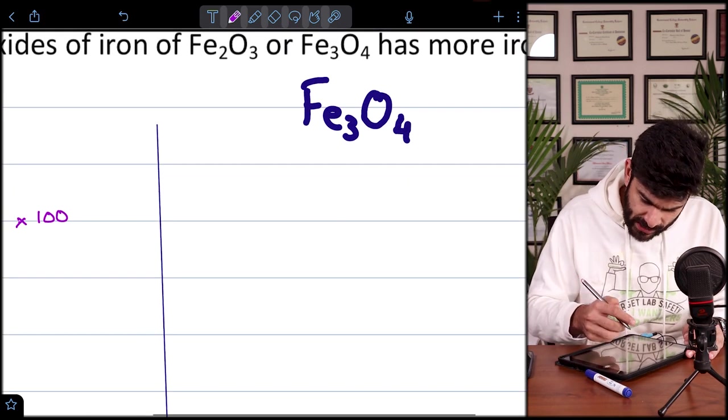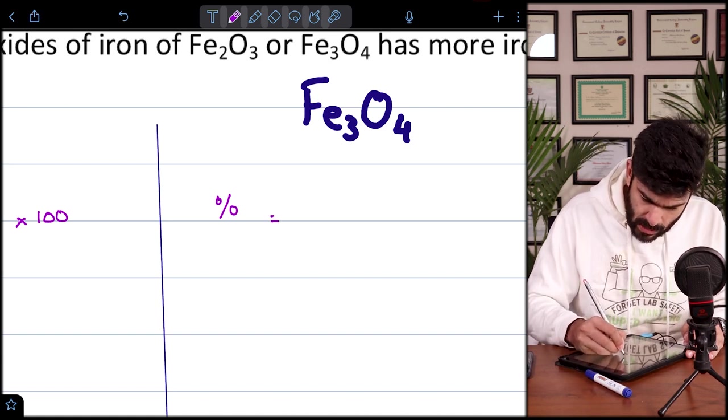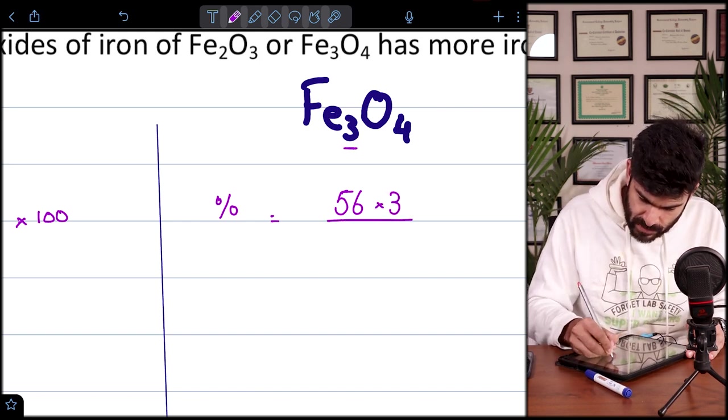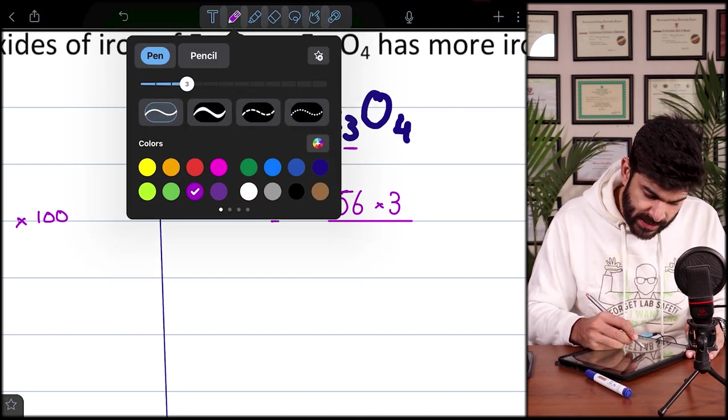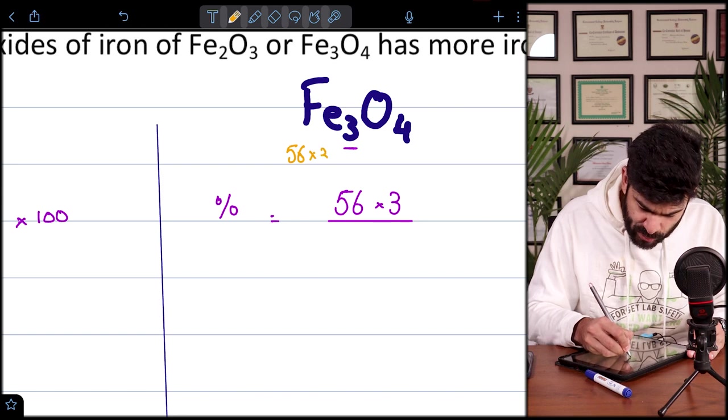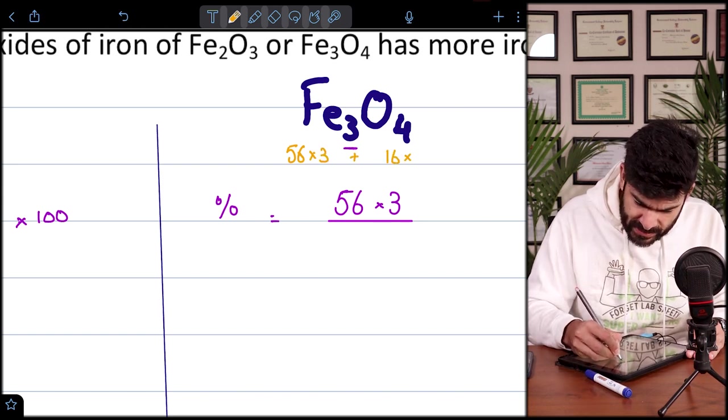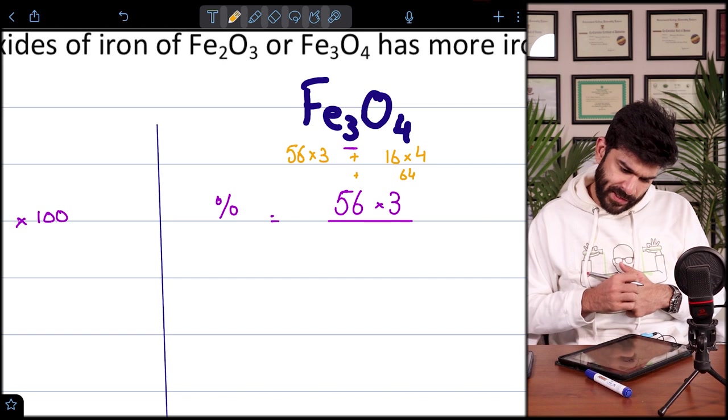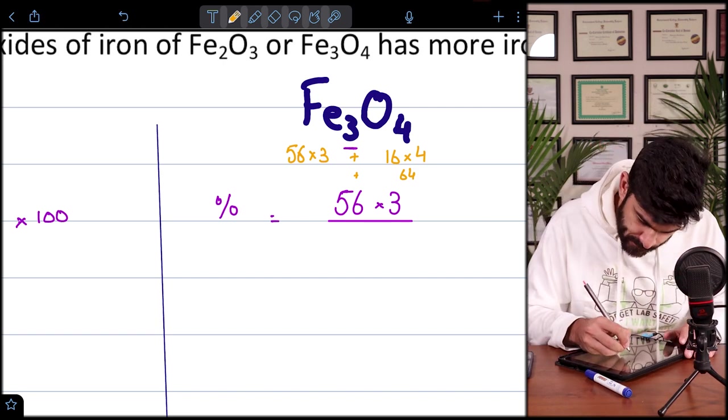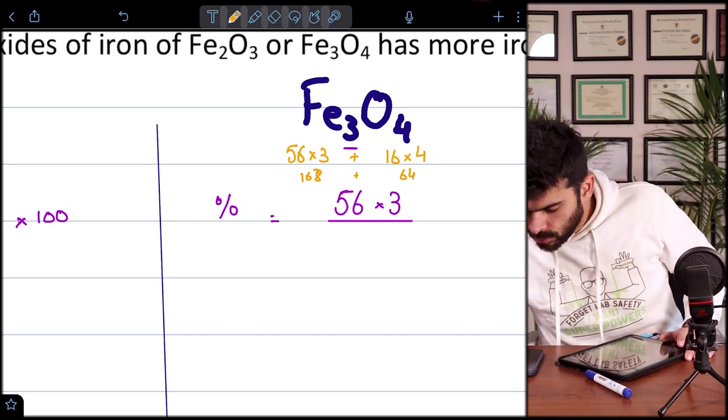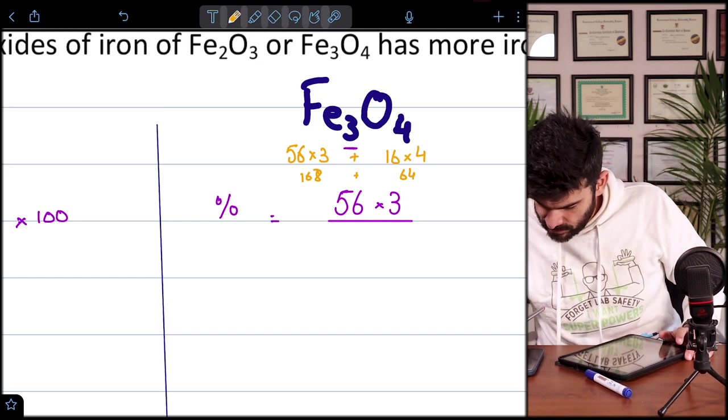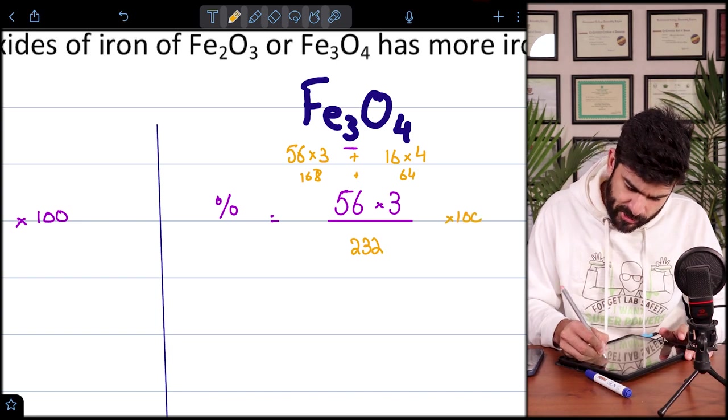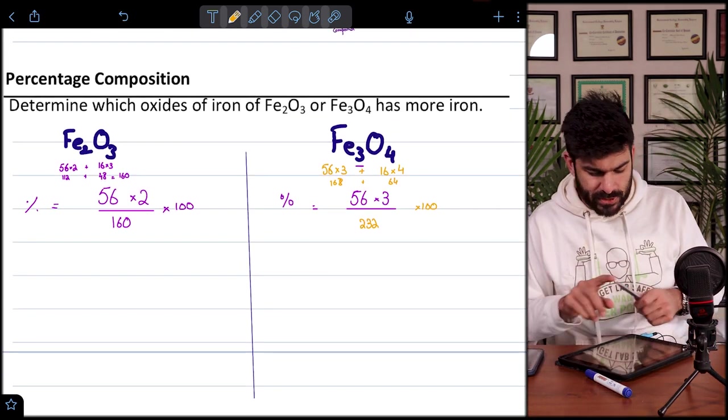Likewise, for Fe3O4, we again have 56 and we multiply 56 by 3 this time because we have three irons here. And then we divide it by the MR of the compound. 56 into 3 plus 16 into 4. This becomes 64 and this becomes 168. 168 plus 64, that's 232. And we multiply the value by 100.